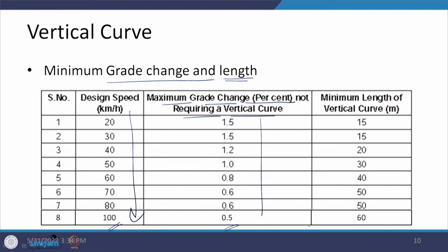Even if a vertical curve is not strictly required, providing one eliminates the kink. So a minimum length can be provided as a vertical curve — either a summit curve or a valley curve. At 20 or 30 km/h, this minimum length is 15 meters, but at 100 km/h it is 60 meters, which needs to be provided as a minimum vertical curve.